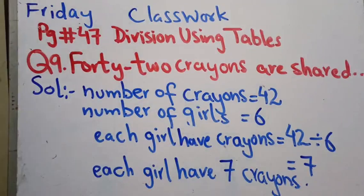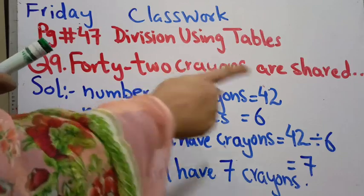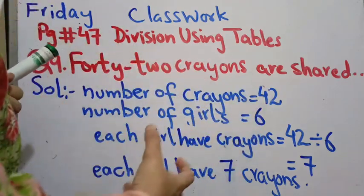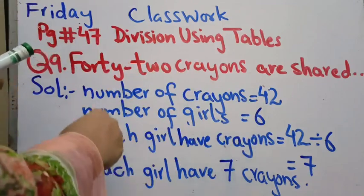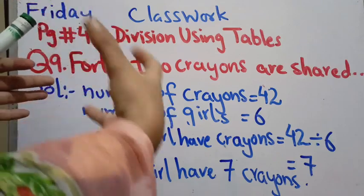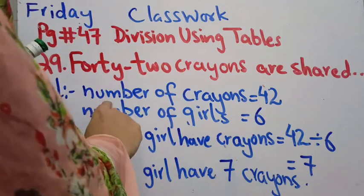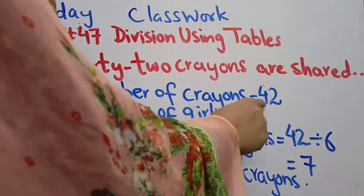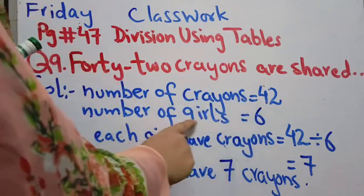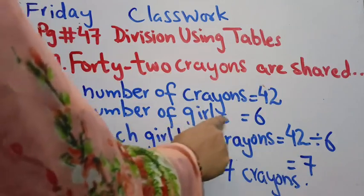Number of crayons is 42. It is good if you make a little statement so you easily understand what you are doing. Number of crayons is equal to 42. Number of girls in a group is 6, so we will write number of girls is equal to 6.